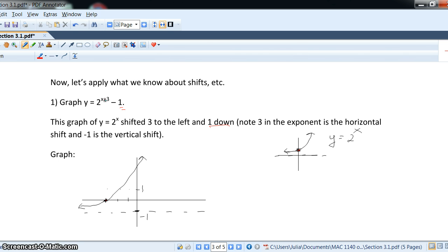So, here we call left-to-right, if it's positive, that means the shift is 3 to the left, and the up-and-down are more straightforward, so negative 1 means 1 down. So, how do we draw it?